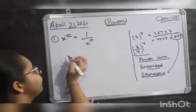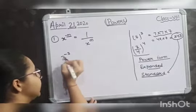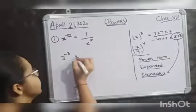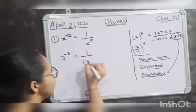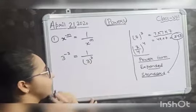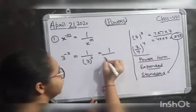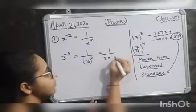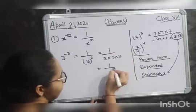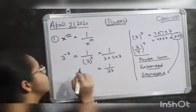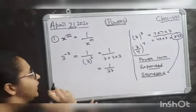For example, if you have the number 3 raised to the power minus 3, you will first write it as 1 upon 3 raised to the power 3. The exponent is 3, so 3 is multiplied 3 times, giving you 1 upon 27. So 3 raised to the power minus 3 equals 1 upon 27.